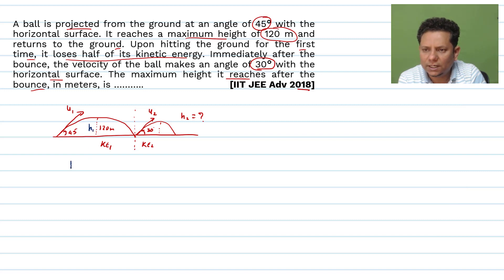h1 will be equal to u squared sine squared theta divided by 2g. This is your maximum height formula.